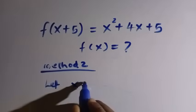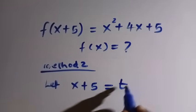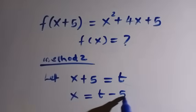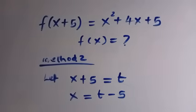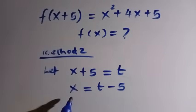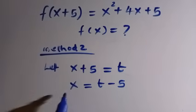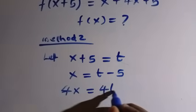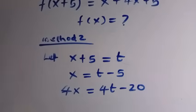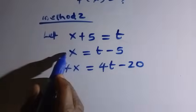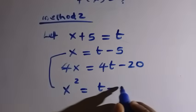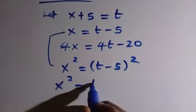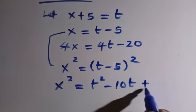If I let x plus 5, which is our domain, equal t, then I'm going to make x the subject of the formula. Therefore, x equals t minus 5. From the right-hand side, we have x squared plus 4x plus 5. I need x, which is t minus 5. I also need 4x — multiplying by 4, we get 4x equals 4t minus 20. And I need x squared, so x squared equals t minus 5, all squared, which gives t squared minus 10t plus 25.